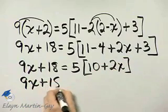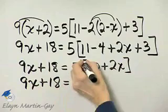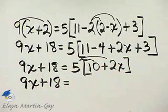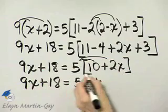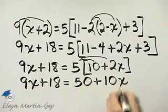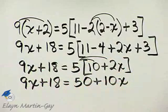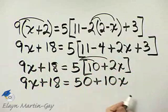9x plus 18 is equal to, using the distributive property, 5 times 10 is 50 plus, that's 10x. This is a linear equation, so let's move x's. I have a habit of moving x's to the left, numbers to the right, makes no difference.